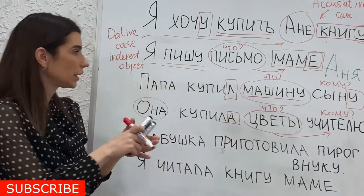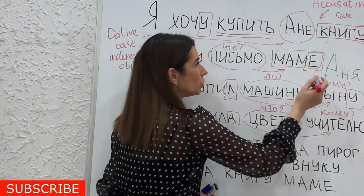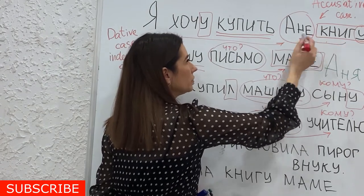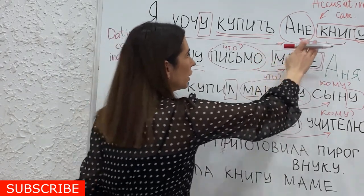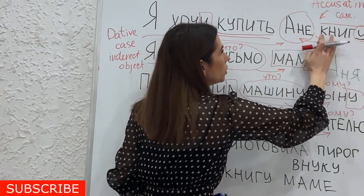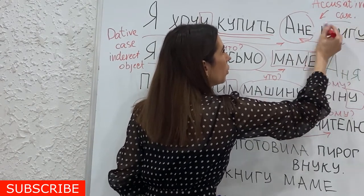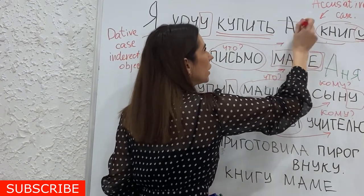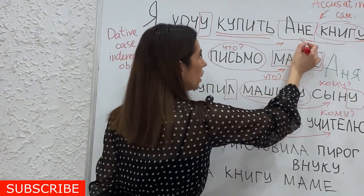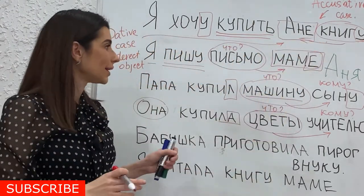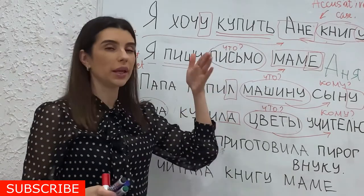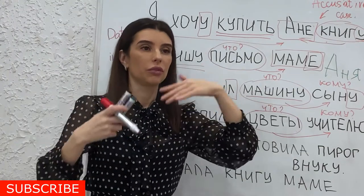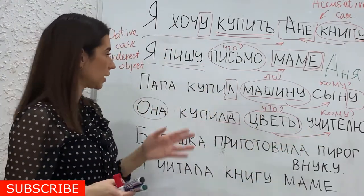Also you can see: Машину сыну, письмо маме, книгу Анне. In Russian it doesn't matter where the direct or indirect object appears — from first or second place. Both orders are correct.